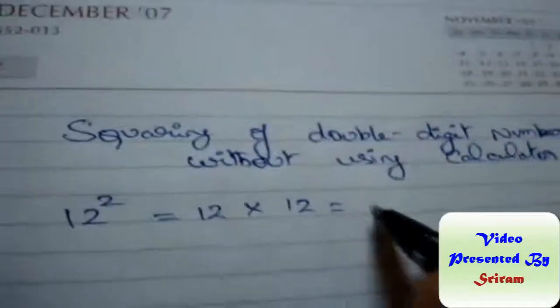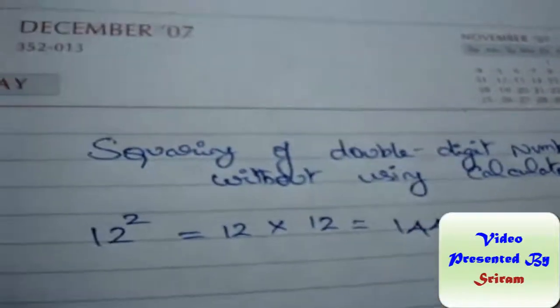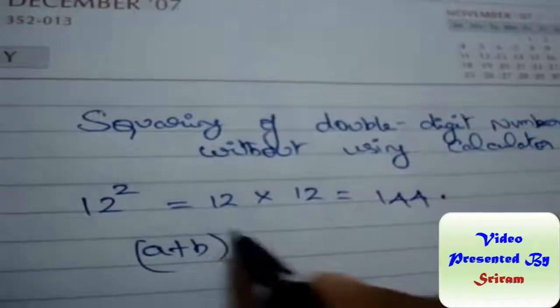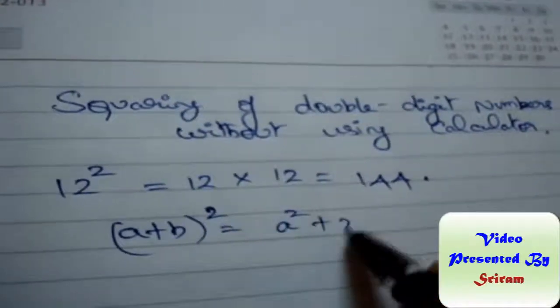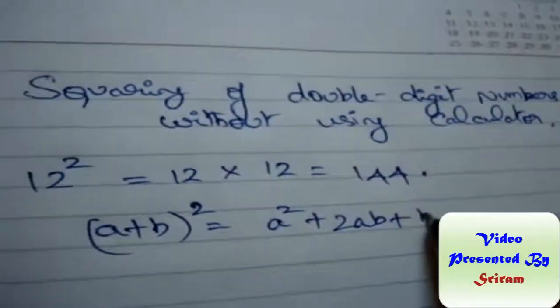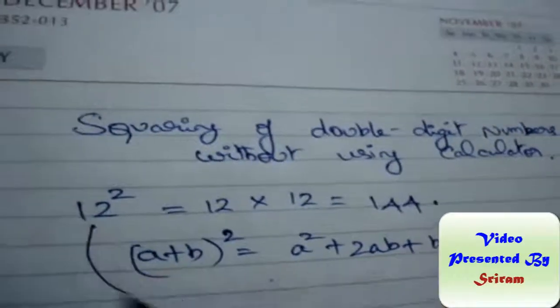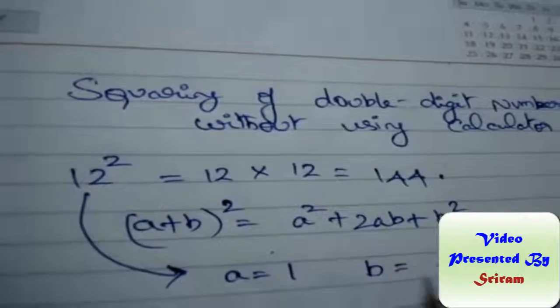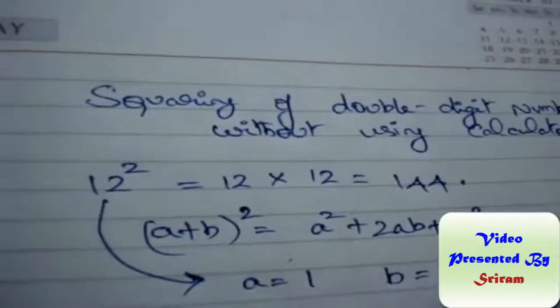We can take this as (a + b) whole squared, which is equal to a² + 2ab + b², where for 12, a is equal to 1 and b is equal to 2. So substituting this formula: